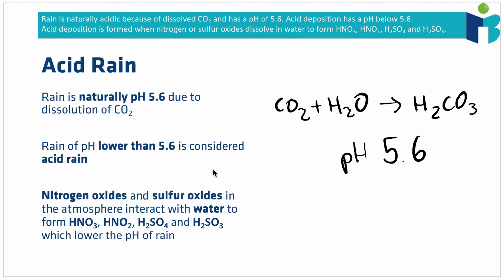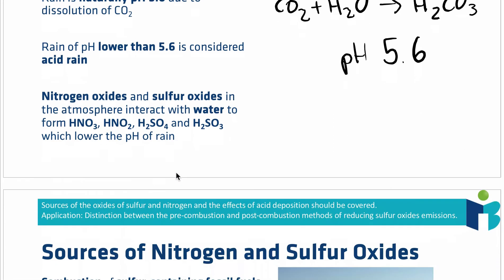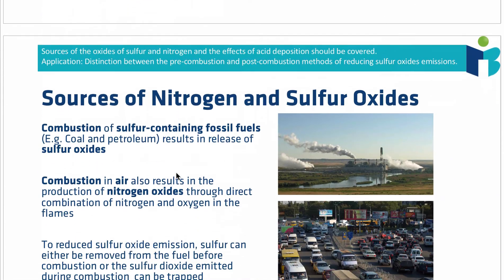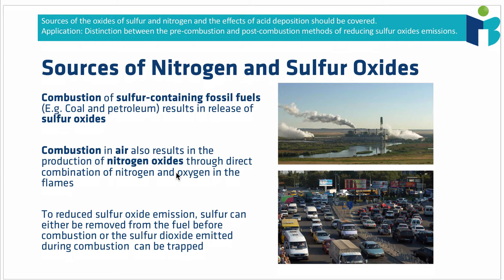However, what we find is that many processes that humans control result in the release of nitrogen oxides and sulfur oxides. These can combine with water in the same way as CO₂ does in the atmosphere in order to form various acidic species, and this can result in the pH of rain being lowered even further below 5.6, which is very much a problem.